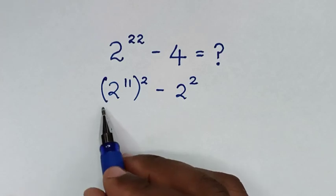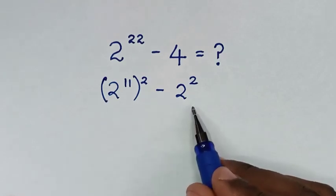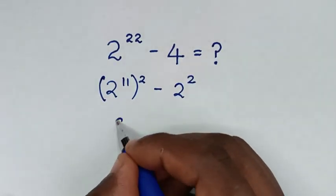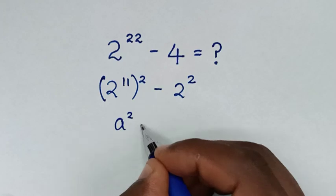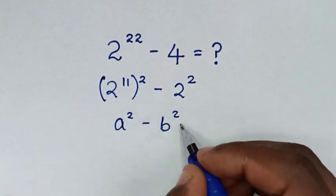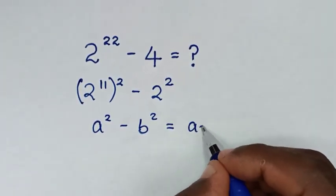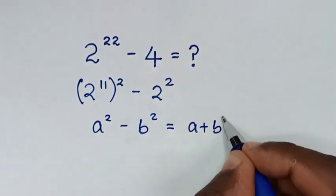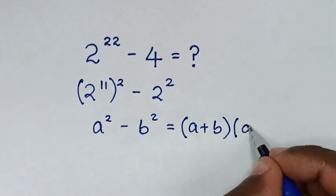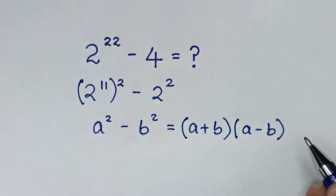Now this is in the form of a perfect square, so we'll apply the perfect square rule, which is a square minus b square is equal to (a plus b) times (a minus b).